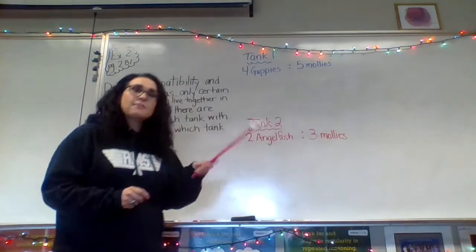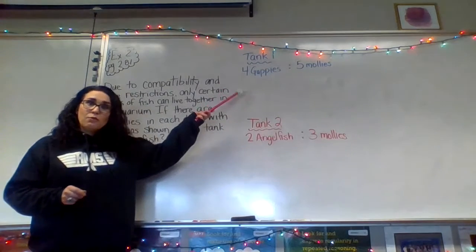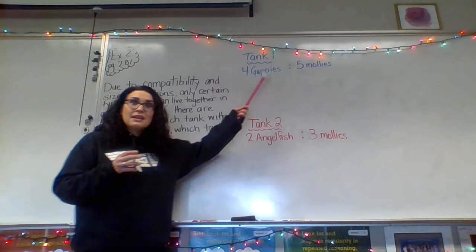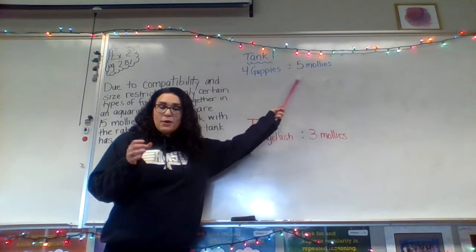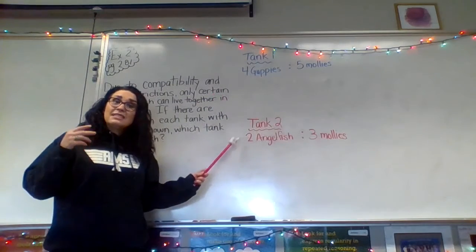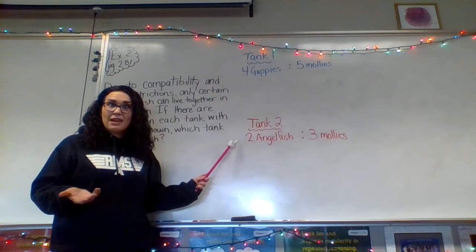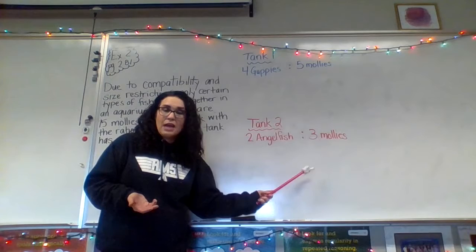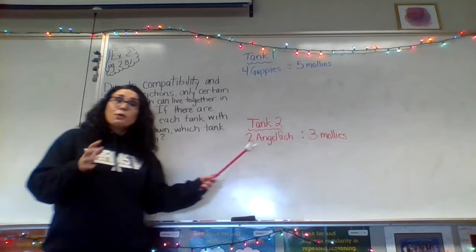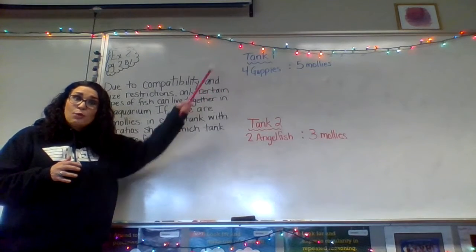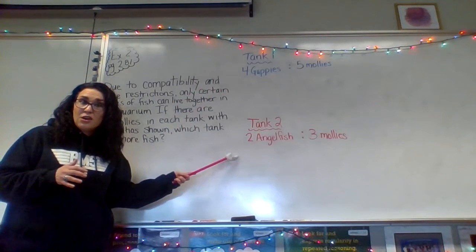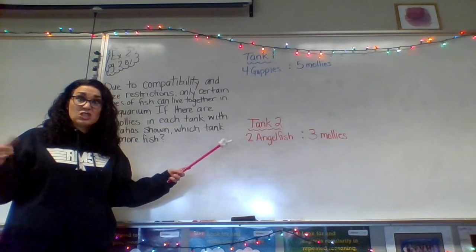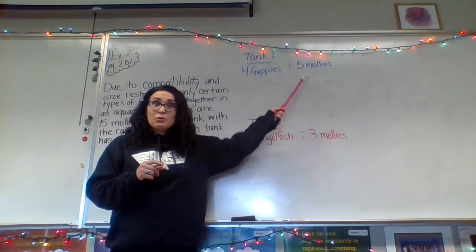There are two different tanks. Tank one — we're going to use blue to represent that — has four guppies to every five mollies. Tank two — represented in red — has two angelfish for every three mollies. We're going to compare tank one and tank two to see which one will have more fish when the mollies equal 15.